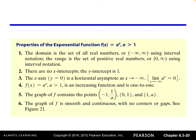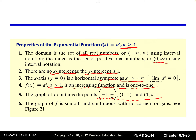The general property of exponential function f of x equals A raised to the x power, when the growth factor A is greater than 1: the domain is all real numbers, the range is the set of positive numbers from 0 to positive infinity, there is no x-intercept, the y-intercept is 1, and the x-axis is the horizontal asymptote as x approaches negative infinity. The function is increasing and it's a one-to-one function, and its graph always contains three specific points. The graph is smooth and continuous with no corner or gap.